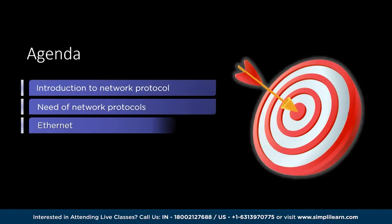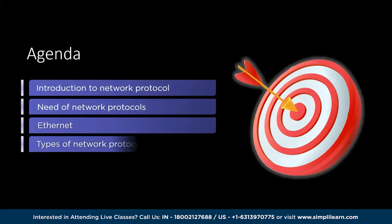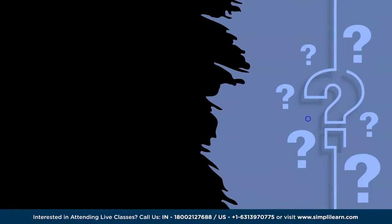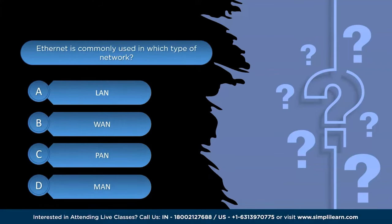In this video, we will cover topics like introduction to network protocols, the need for network protocols, what is Ethernet, types of network protocols like TCP, UDP, IP, Post Office Protocol (POP), SMTP, and much more. Before moving forward, here is a quick question: Ethernet is commonly used in which type of network? Option A is LAN (Local Area Network), Option B is WAN (Wide Area Network), Option C is PAN (Personal Area Network), and Option D is MAN (Metropolitan Area Network). You can pause this video and answer in the comment section below.